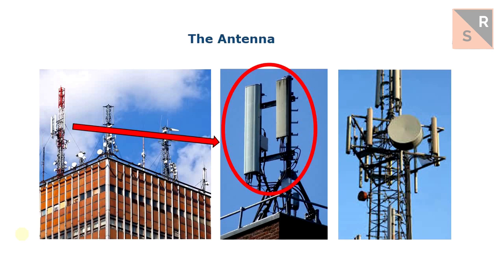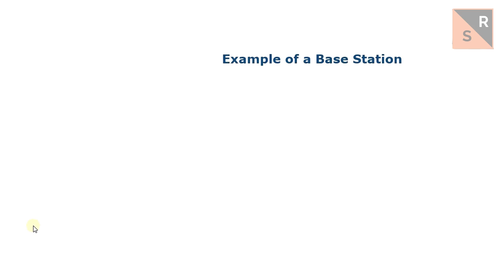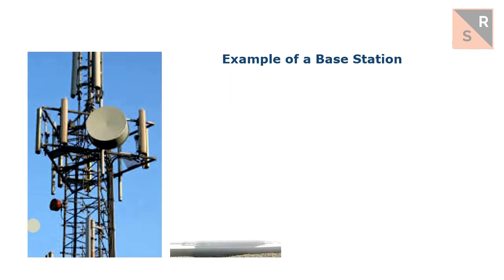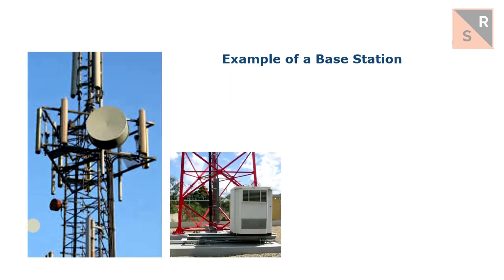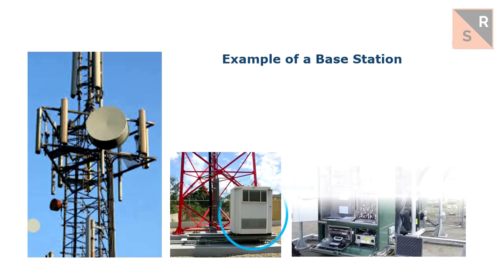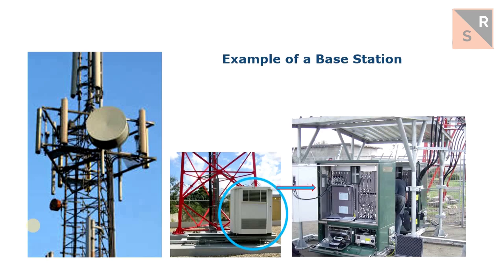An antenna is a radiating device that transforms high-frequency alternating current into electromagnetic waves, or the other way around. If we pay attention, in some cases what we see is an antenna on a tower and beside it a technical cabinet. Inside the technical cabinet, we see a set of transceivers that enable the radio transmission between the terminal, which is also a transceiver, and the network.